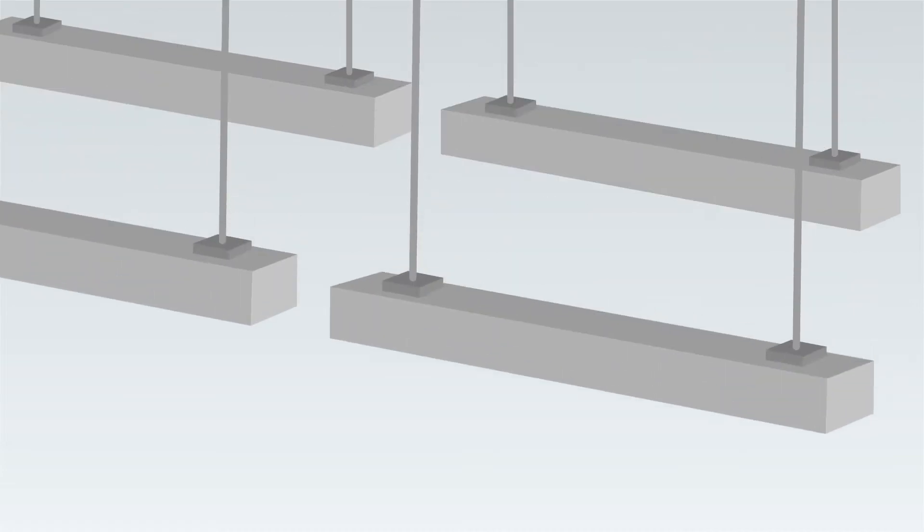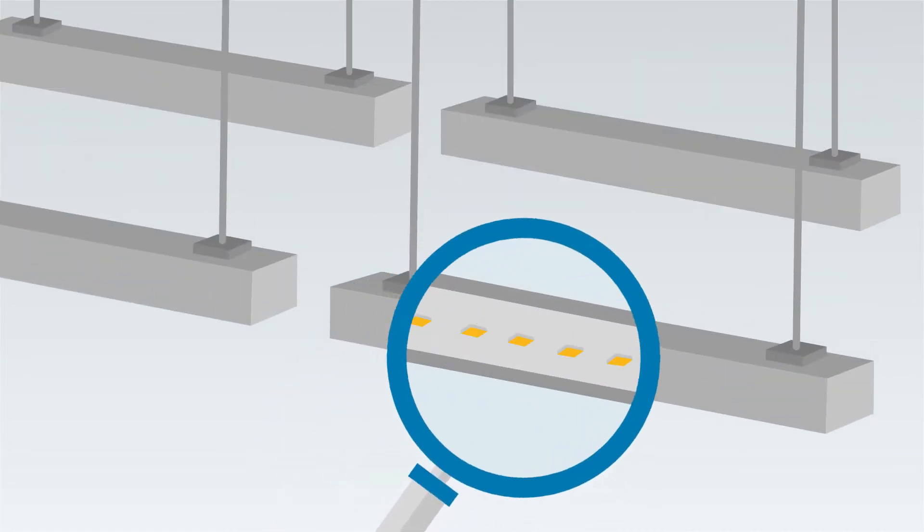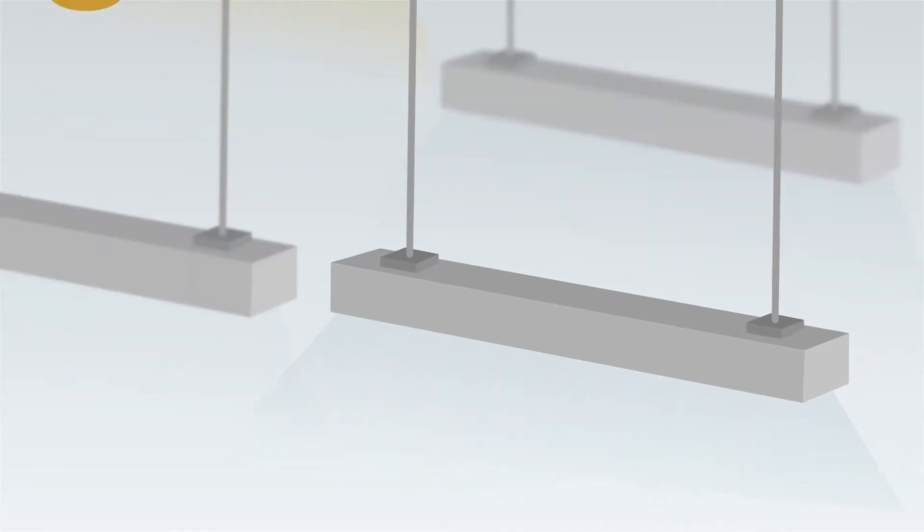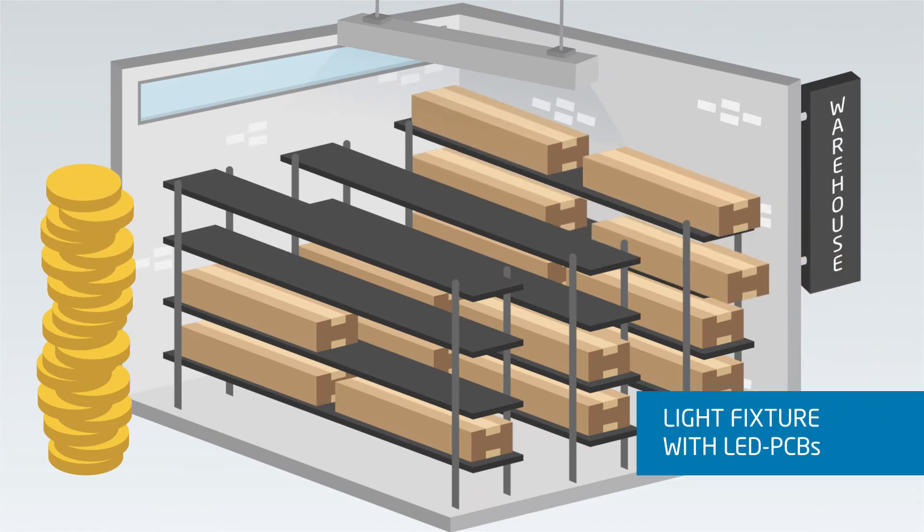Many conventional lighting solutions today are constructed with fixed LED boards, which means that once light fixtures are produced to specification, they can't be changed. This is inflexible and inefficient.